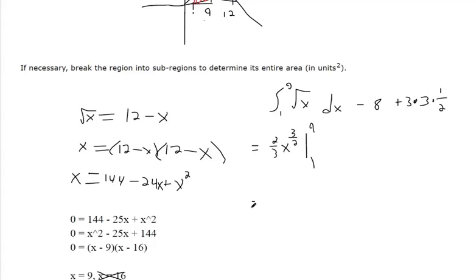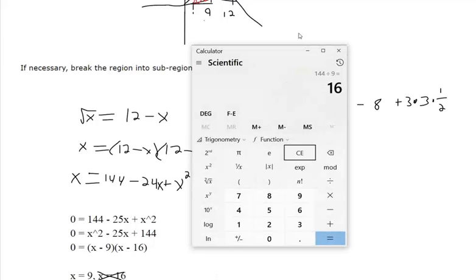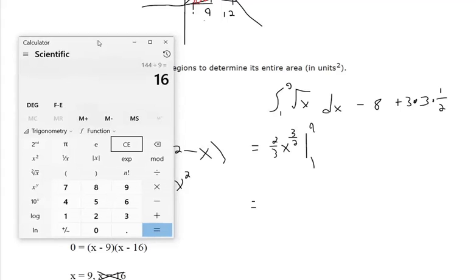And then we've got all that other jazz going on. So without a calculator, 9 to 3 halves, that's the same thing as 9 squared over the square root of 9. That's 81. What is that, 81 divided by 3? We'll double check.